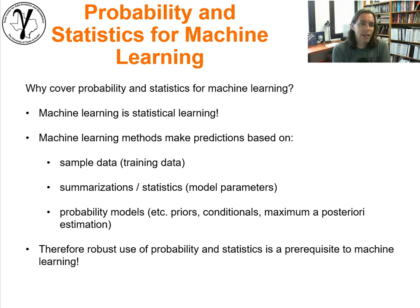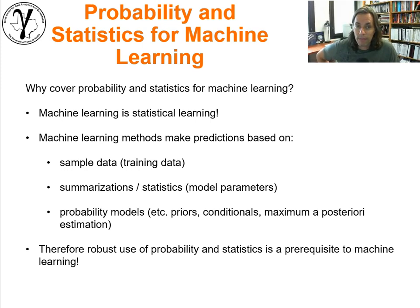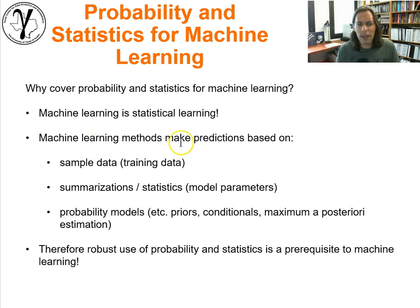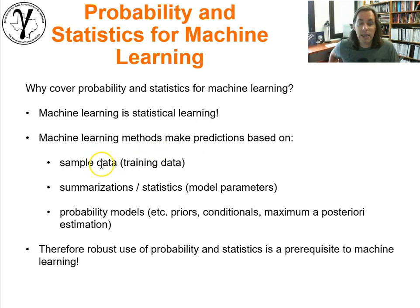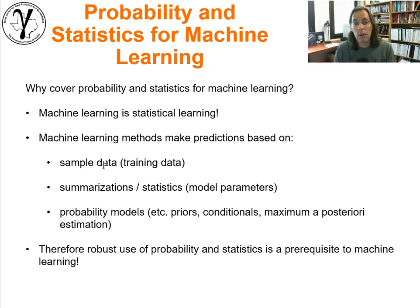So why cover probability and statistics for machine learning? I would argue, as many do, that machine learning is statistical learning. It's a data-driven approach — using some form of analysis and summarization of data to support decision making and build models. That in fact is a statistical practice. Machine learning methods are really making predictions or inferences more broadly based on a set of sample data, which is a statistical operation.